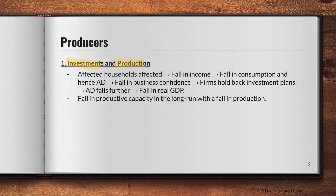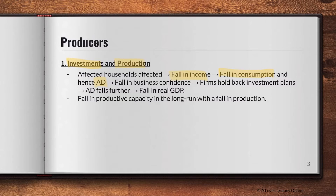When households are affected by unemployment and see a fall or no income, this causes a fall in consumption and hence AD. This signals to producers that demand is slowing and falling. Producers will cut back on production to minimize losses and maintain decent profits. There will be a fall in business confidence, so firms will hold back on investment plans and production, causing AD to fall further and real GDP to fall.